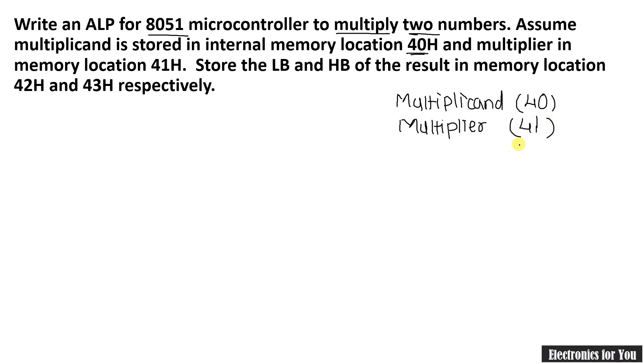And multiplier is stored at memory location 41H. We have to multiply these two numbers and there will be a result of 16-bit. Now as per our multiplication instruction the multiplicand must be stored into accumulator and multiplier must be stored into B register and MUL AB will multiply this A and B and the result will be divided into 2 bytes, that is a result will be of 16-bit.